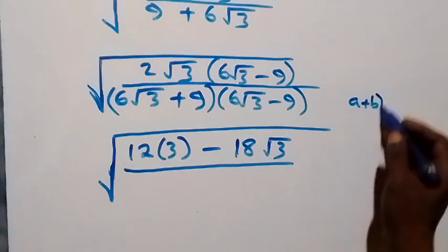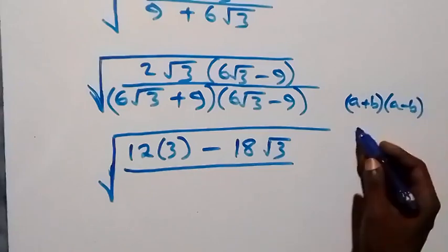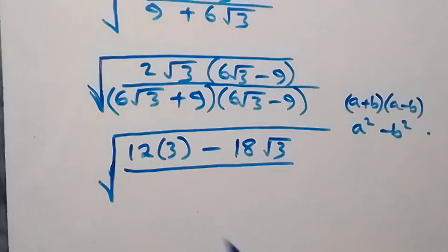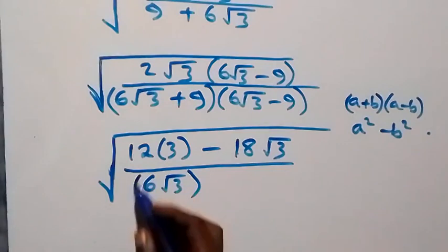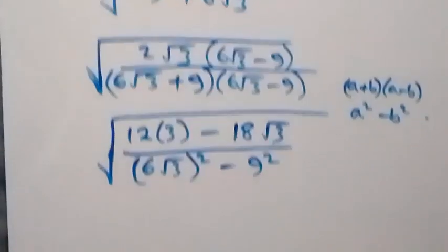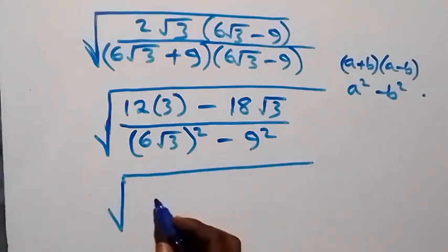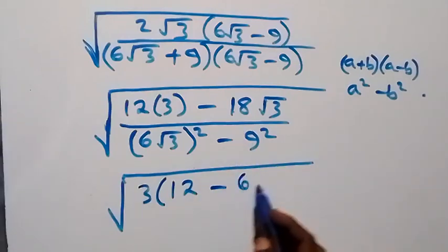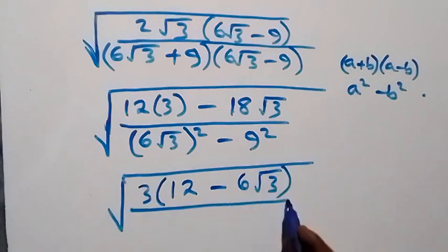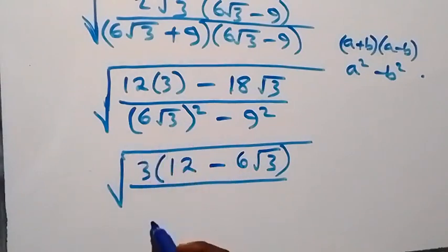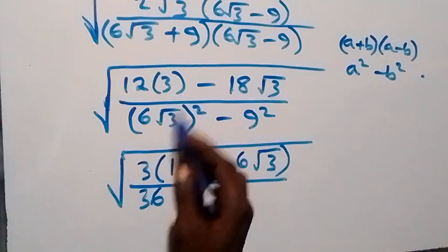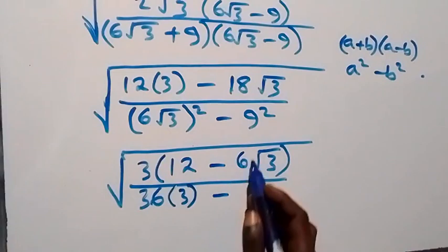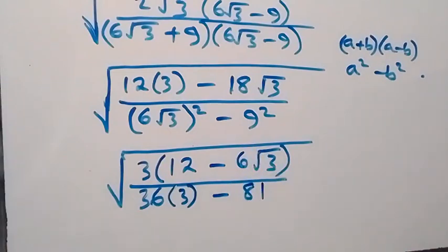The denominator follows from the identity: when we have (a + b)(a − b), this equals a squared minus b squared. So we have (6 root 3) squared minus 9 squared. That is, 6 squared times 3 — the square and square root cancel — giving 36 times 3, which is 108... then minus 9 squared, which is 81.